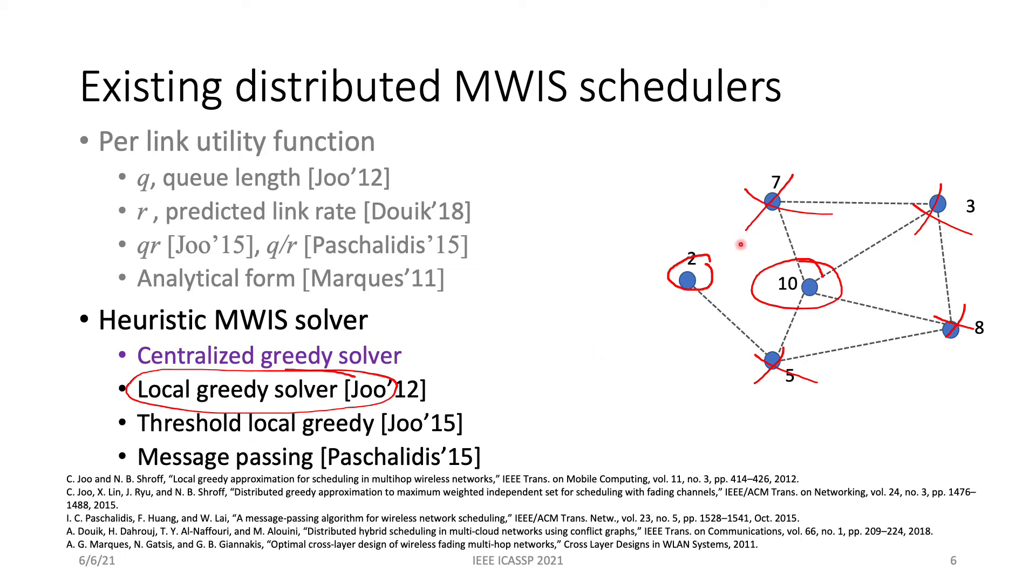We define this number of iterations to finish a distributed solver as local complexity, which basically says how many rounds of local exchanges are required between nodes and their neighbors to finish the algorithm. The local greedy solver has a local complexity of log size of the graph, while message passing has a linear local complexity. The problem of these heuristics is that they do not fully leverage the graph topology, and our work is going to close this gap.